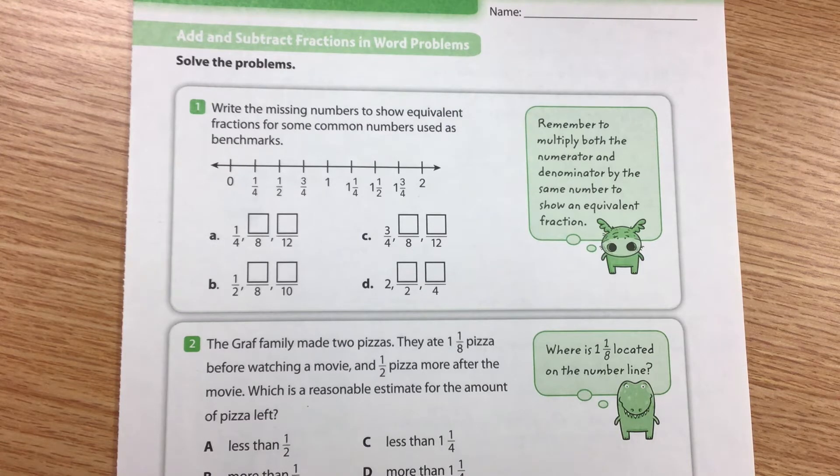Problem number one says write the missing numbers to show equivalent fractions for some common numbers used as benchmark fractions.